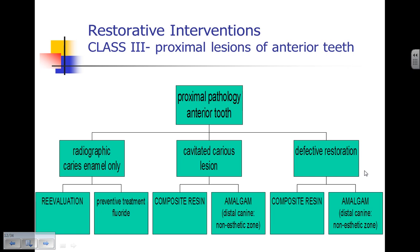Our interventions are based upon the degree of pathology. When caries is in the enamel only without cavitation, we can reevaluate and use preventive treatment, typically fluorides. When the lesion becomes cavitated or there's a defective restoration, we need to restore. For anterior teeth we're typically using tooth-colored composite resins. There are times when amalgam can be used on the distal of a maxillary canine, but in today's practice the majority of Class 3s are done with composite resin.